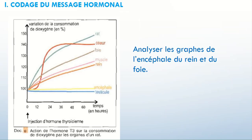Les valeurs vont différer un peu d'une personne à l'autre parce que le graphe n'est pas très précis, puisqu'il n'y a pas vraiment de quadrillage, donc ça va différer un peu. C'est tolérable à 2% peut-être entre une personne et l'autre. Et juste une remarque : lorsque vous êtes en train d'analyser, ce n'est pas la peine de prendre point par point.